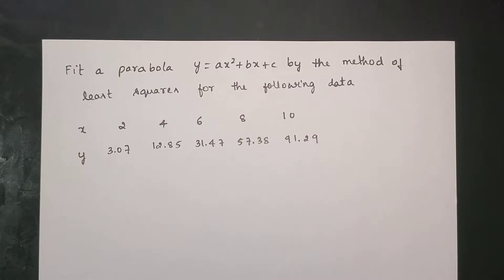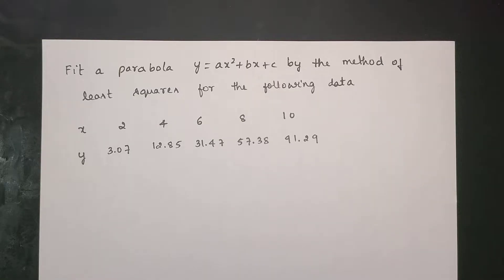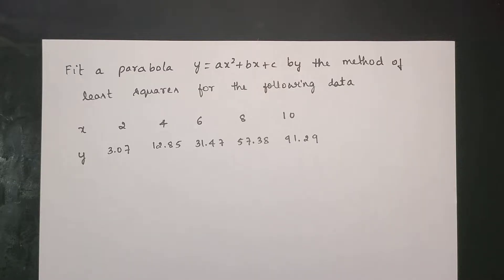Next question. Fit a parabola y = ax² + bx + c by the method of least squares for the following data: x is equal to 2, 4, 6, 8, 10; y is equal to 3.07, 12.85, 31.47, 57.38, 91.29.